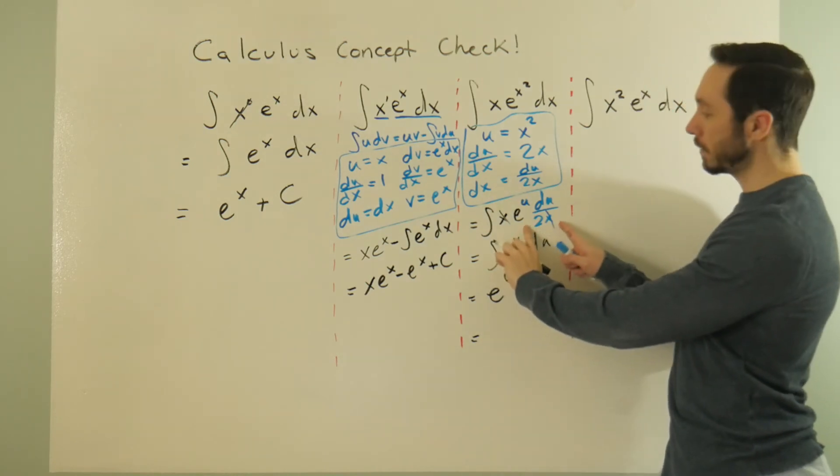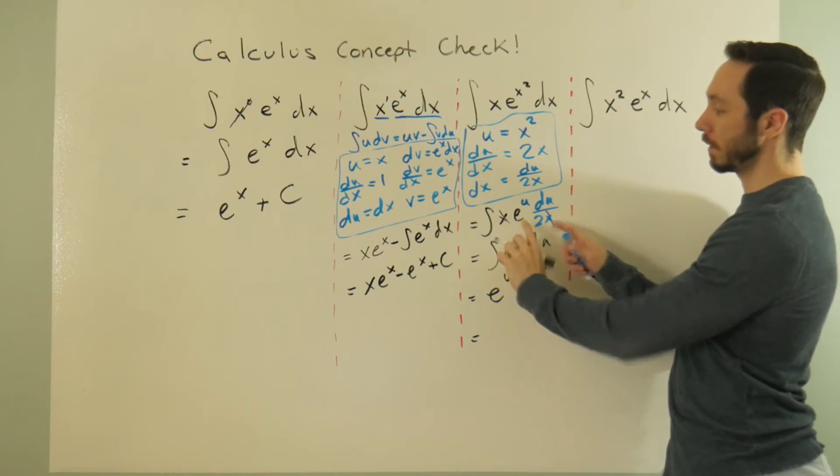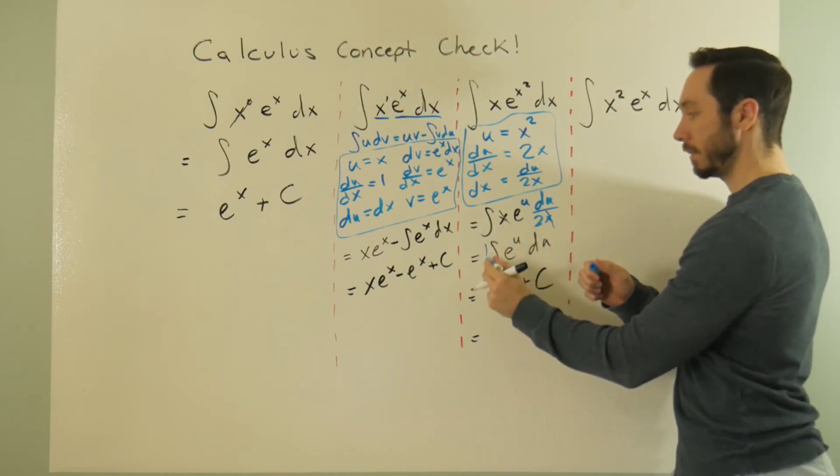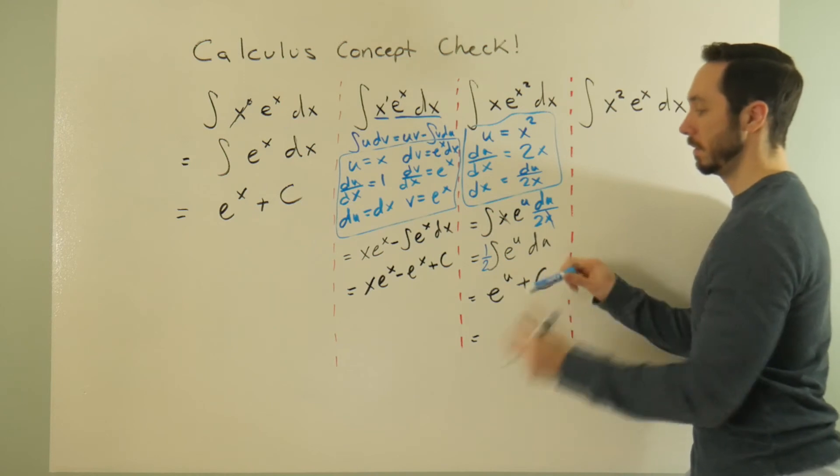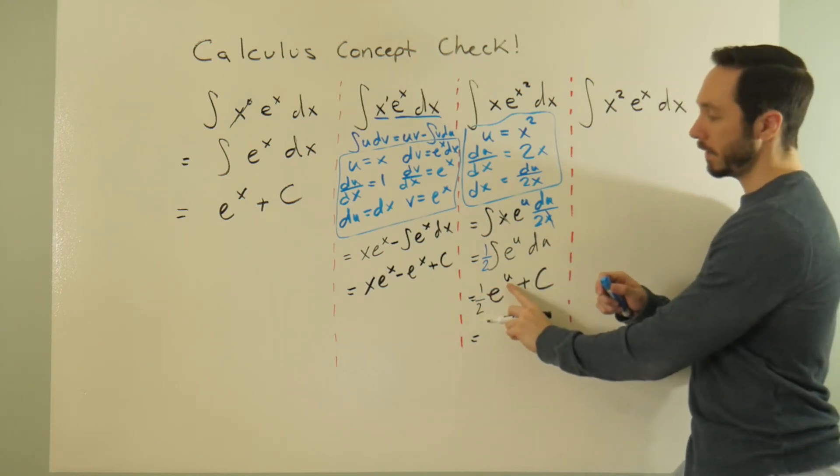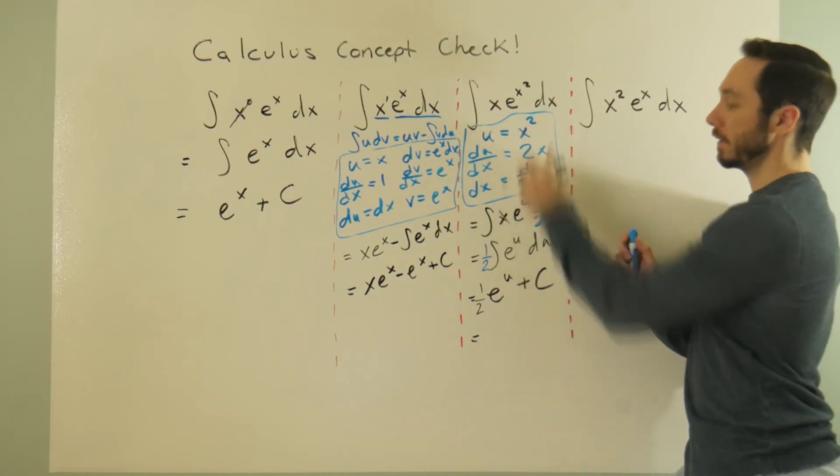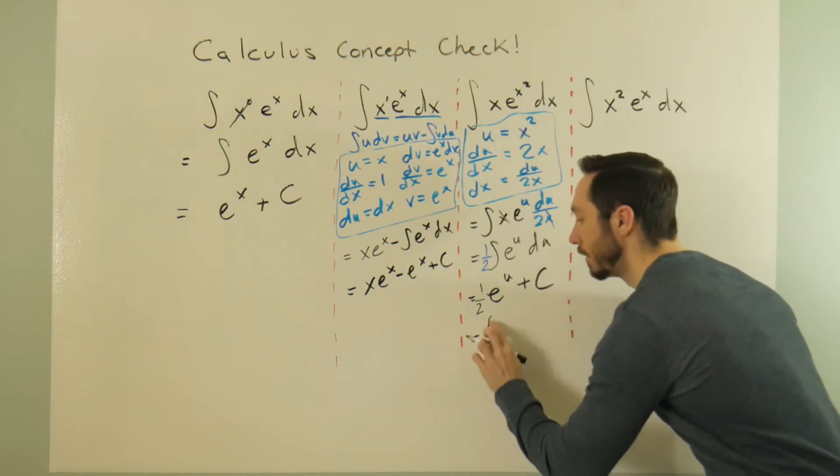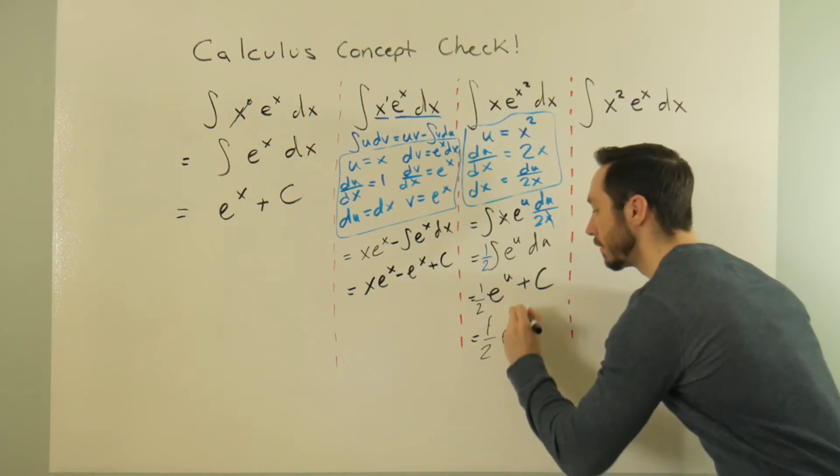But I have to replug back in my u value. One thing I forgot though - this divide by two. I can pull it out, put it on the outside here. This divide by two is still there, and very lastly we got to plug in our u value of x squared. So we have one-half e^(x^2) plus C.